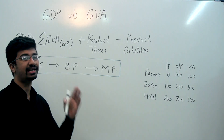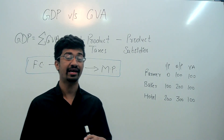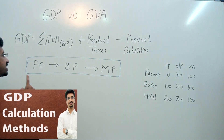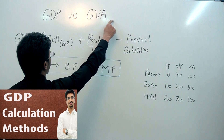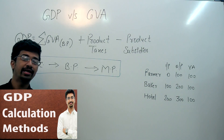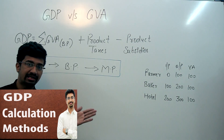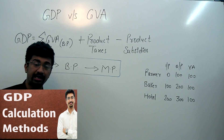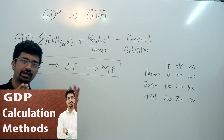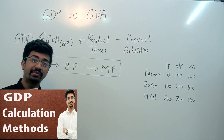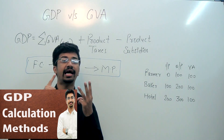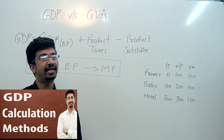This lecture is about the difference between Gross Domestic Product and Gross Value Added. We have already discussed the three different methods of calculating GDP — the income method, the expenditure method, and the gross value added method.